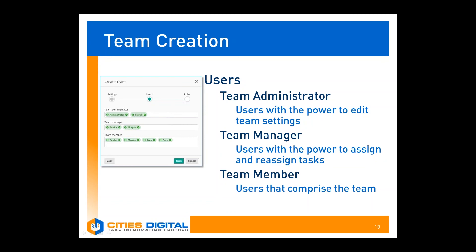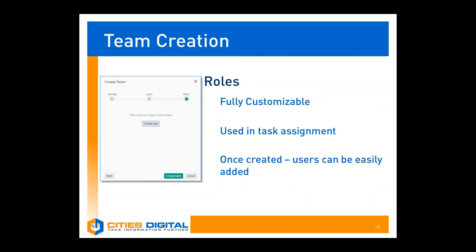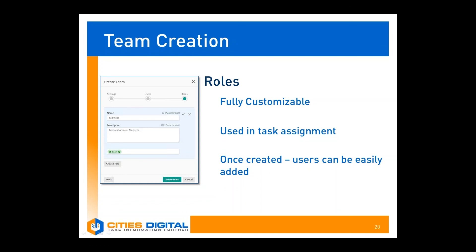Here you can see we've defined our city's digital sales department users. Patrick is an administrator, manager, and member. Morgan is a manager and member. Sean and Erin are both team members. The last setting in team creation are roles — these do not need to be defined, but they can help drastically with task assignment. Let's create our Midwest role. The description notes this role is for Midwest account managers, and we'll assign Sean to this role.